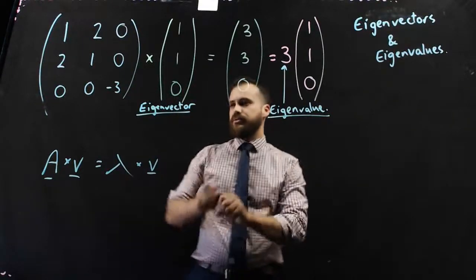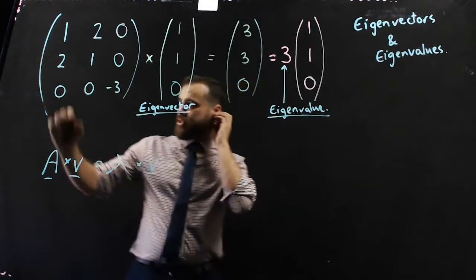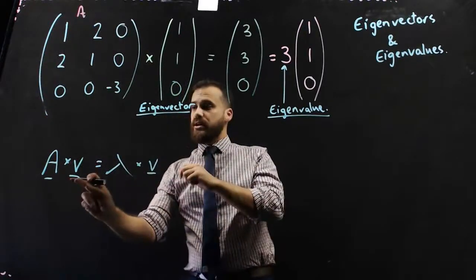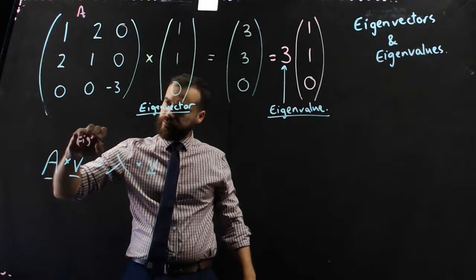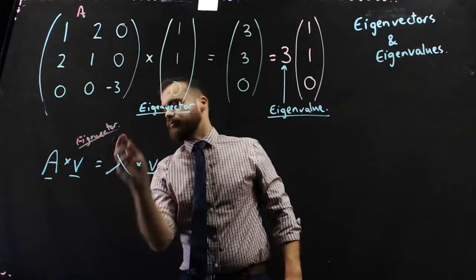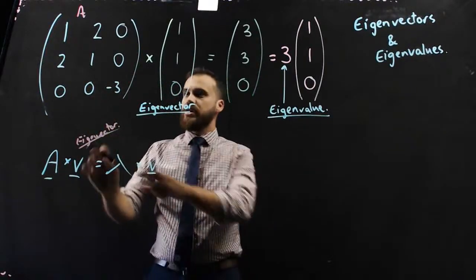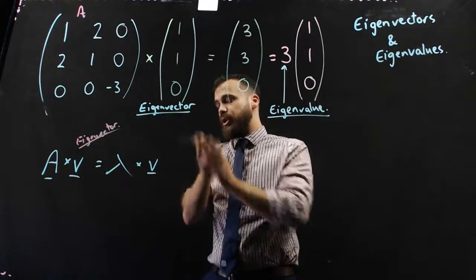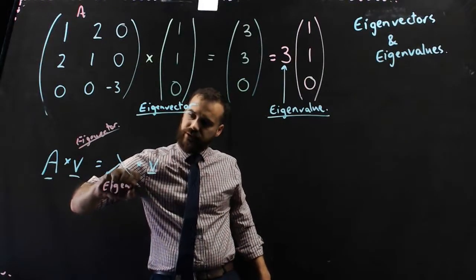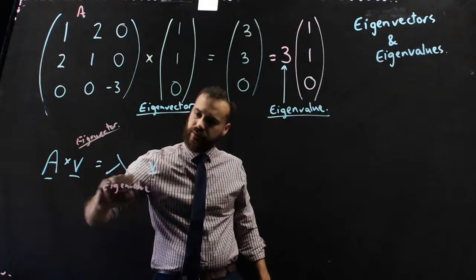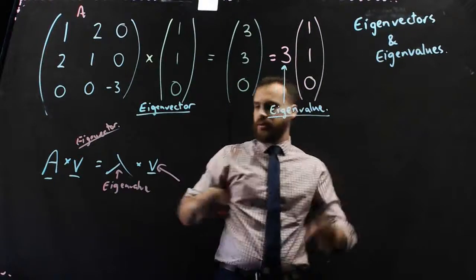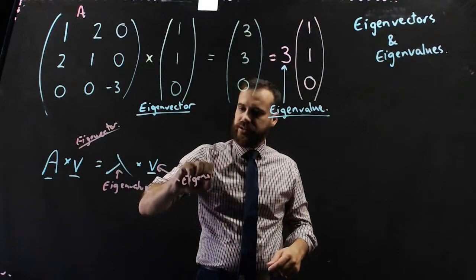So, rewriting, so, matching everything up. This was our A, right here. This is our eigenvector. So, a matrix times a special thing called the eigenvector is equal to the eigenvalue times the eigenvector.